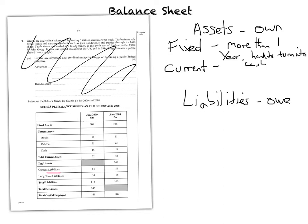A current asset, on the other hand, is an asset that you're going to have for less than a year and you expect it to be quite easy to turn into cash - sometimes they say it's quite liquid. For a company, that would be like stock. It would also be like if someone owed you money - they're called debtors when they owe you money. And obviously cash is the most obvious current asset, because cash is already cash, so it's obviously easier to turn into money.